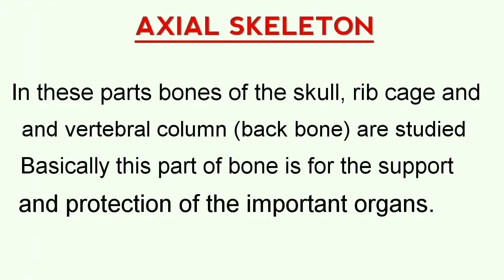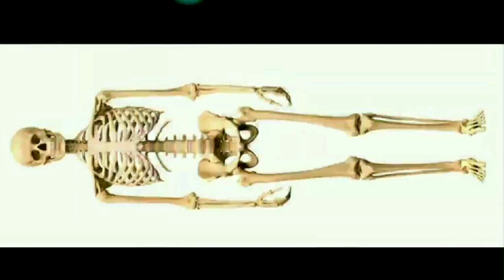In the axial skeleton, the bones of the skull, ribcage, and vertebral column are situated. This part includes the skull, ribcage, and vertebral column. The main function of this part of bones is support and protection for important internal organs.